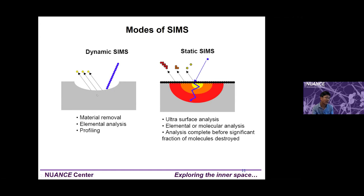Dynamic SIMS is used in some universities and especially in semiconductor companies, where they want to quickly do a depth profile going down through the material. They use it for routine quality control of doping profiles. We use static SIMS for surface analysis because we don't want to damage the surface so quickly.